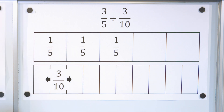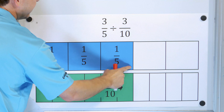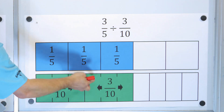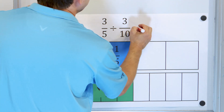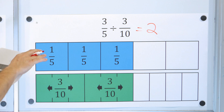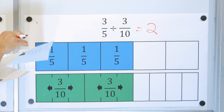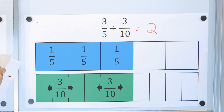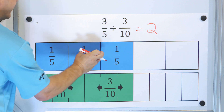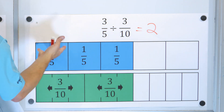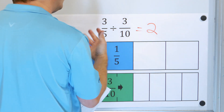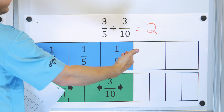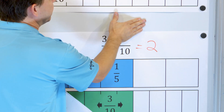How many times will this fit in there? Here in blue it's three-fifths, and then the three-tenths will fit one whole time, and then it will fit exactly another whole time for a total of two whole times. So three-fifths divided by three-tenths is two. But keep in mind, if I change this to one-seventh, the size of the fractions will be a little different and it won't fit a whole number of times — it may be a mixed number type of answer.